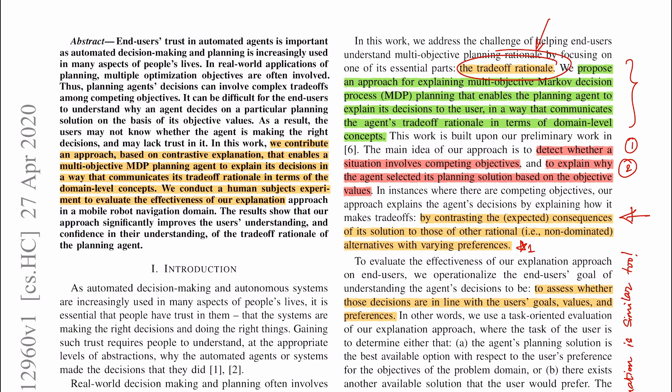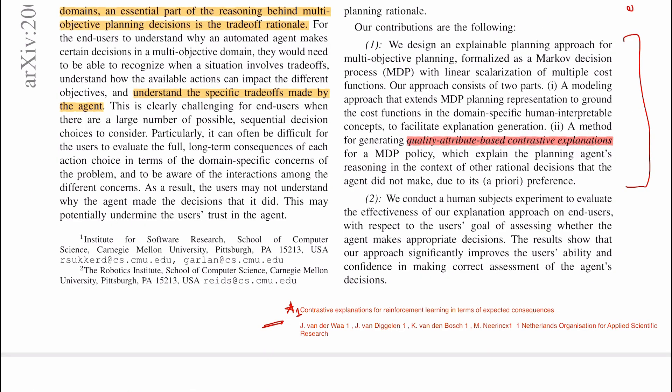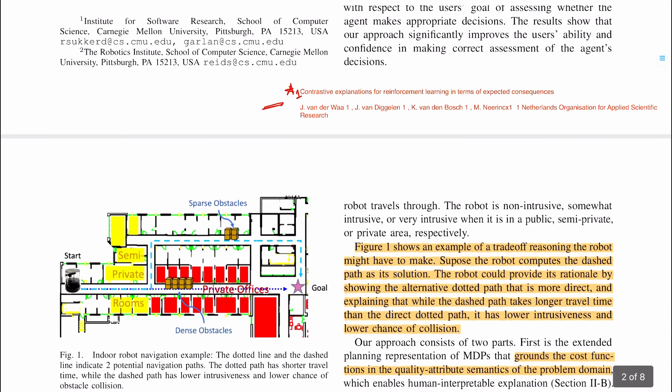There are two parts: first, how do we get B — the other plan to contrast against the agent's plan? Second, once we have B, how do we compare? The comparison is given in the introduction: we contrast the two plans in terms of their expected consequences. If A is a policy and B is some other policy, simulating A gives reward RA and simulating B gives reward RB, and we compare these reward matrices.